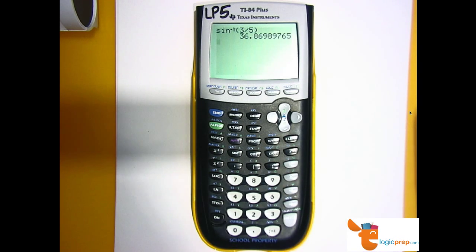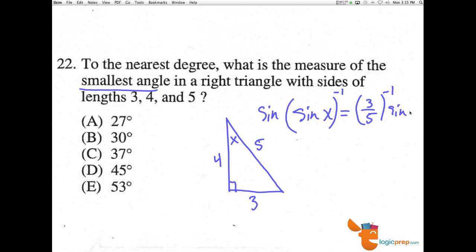And I get 36.8. So x equals 36.8 degrees, making answer choice C, 37, the correct answer. Notice they said nearest degree.